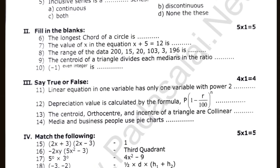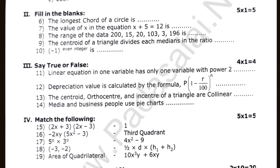The longest chord of the circle is dash. The value of x in the equation x plus 5 is equal to 12 is dash. The range of the data 215, 233, 196 is dash. The centroid of the triangle divides its median in the ratio. If you want to see the answers, they are useful in the video.